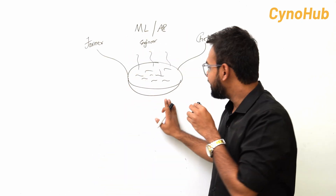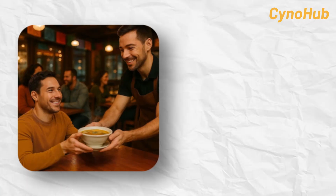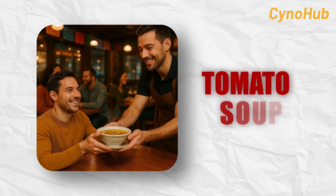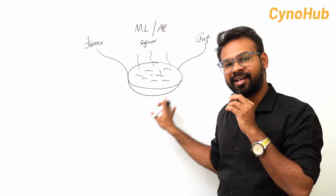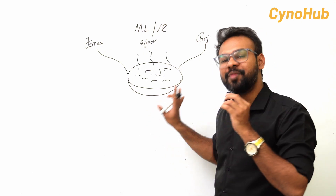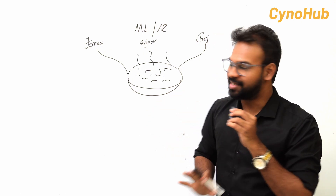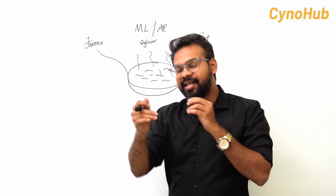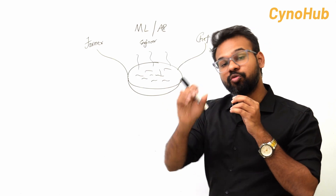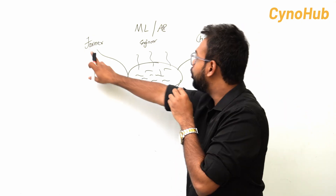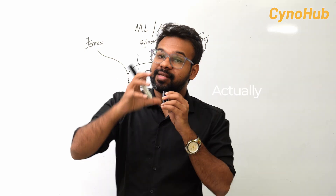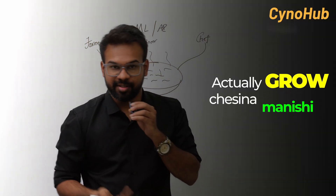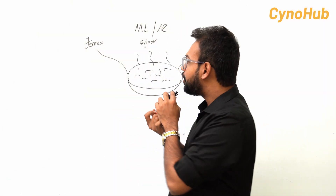Let's give a simple example. Let's say we would like to make tomato soup in a restaurant. There are two main people involved in making this tomato soup: one is the Chef, and the other is a Farmer who grows the tomatoes.